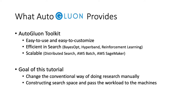For this, we introduce AutoGluon, an HPO toolkit for deep learning. It has an easy-to-use and easy-to-customize API for HPO problems. It is efficient in search, featuring Bayesian optimization, hyperband, reinforcement learning, and other advanced search algorithms. The system is scalable and compatible for distributed search using AWS Batch or AWS SageMaker.